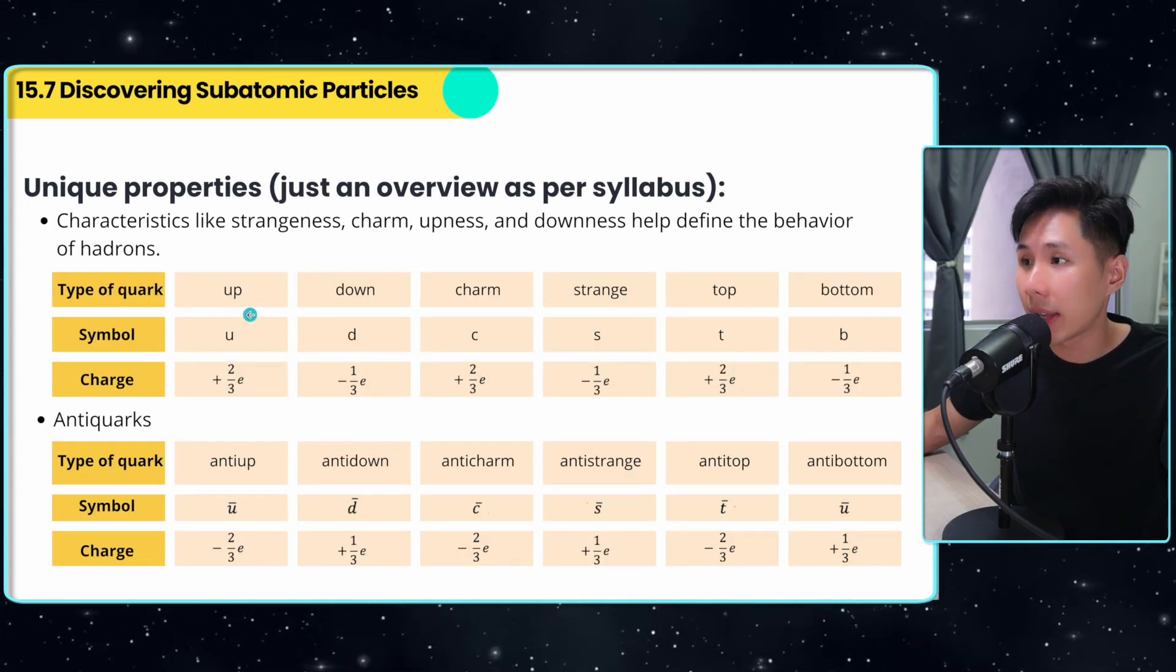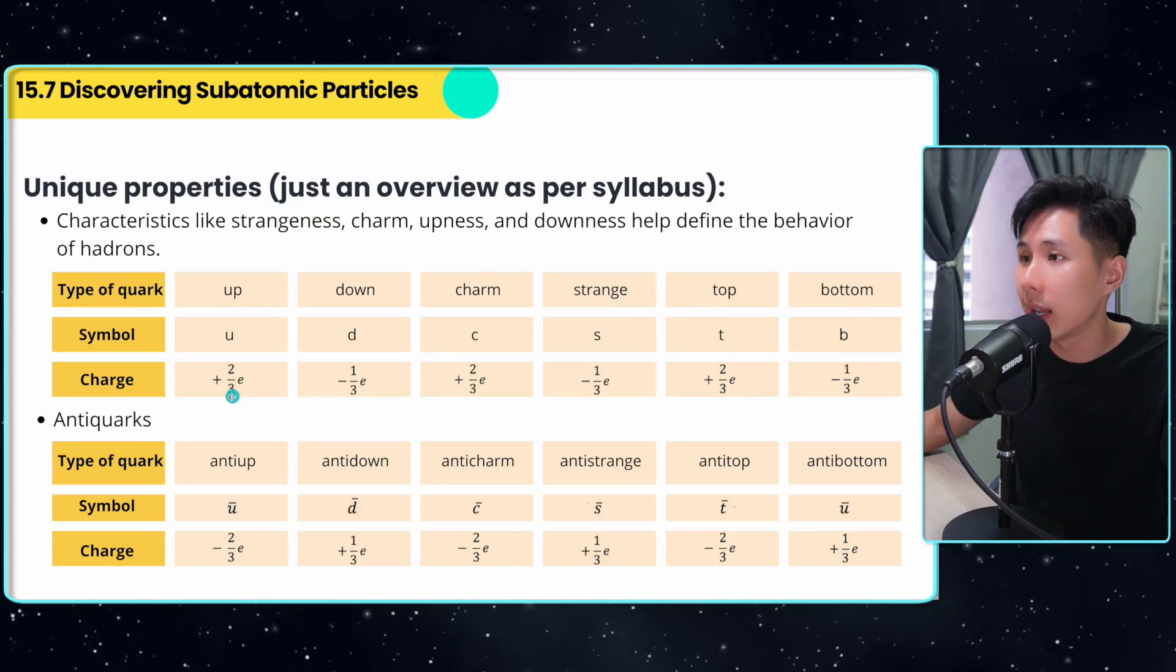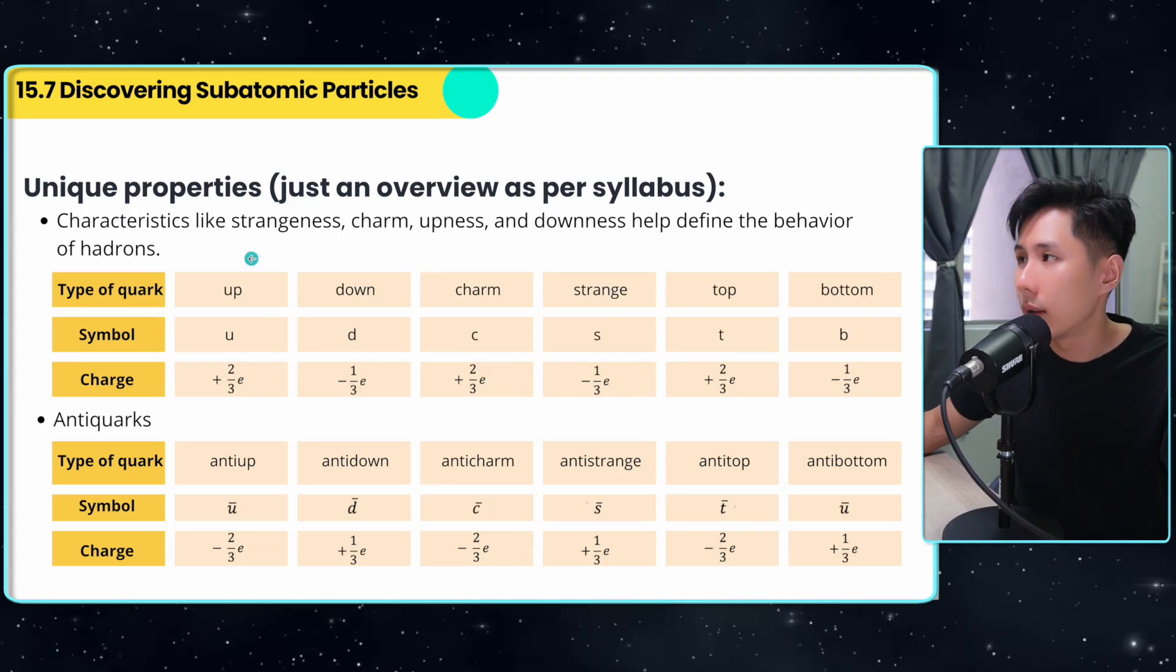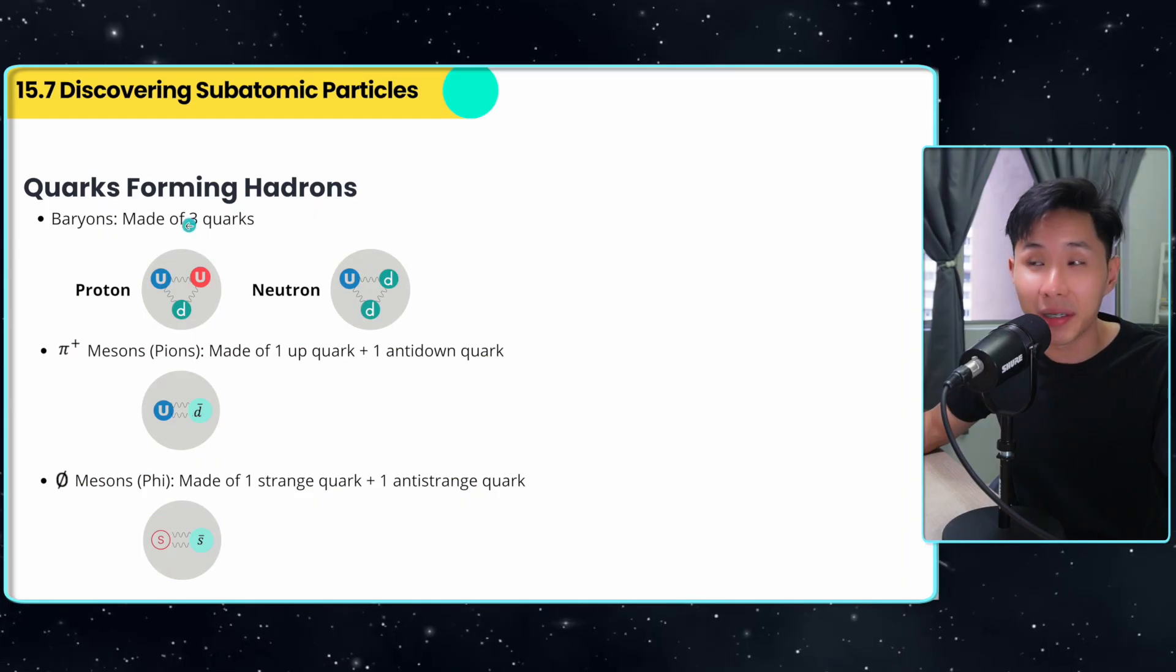The six types of quarks are up, down, charm, strange, top, bottom. You can see that each type of quark has different amounts of charge. This characteristic defines the behavior of hadrons. This is how they can combine together.